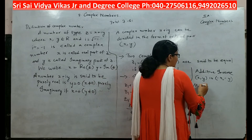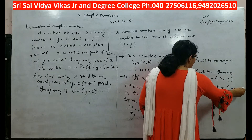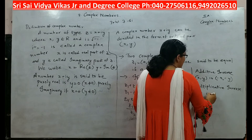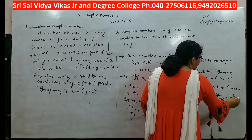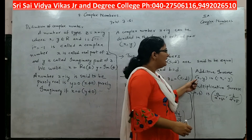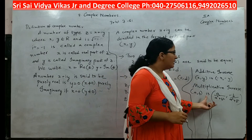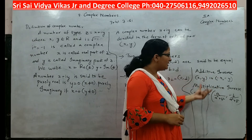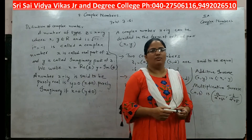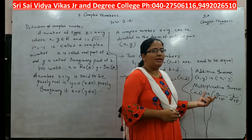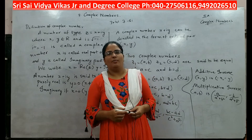Similarly, the multiplicative inverse of the complex number (a, b) is (a/(a²+b²), −b/(a²+b²)). This is the multiplicative inverse and that was the additive inverse. Multiplicative inverse means if you multiply these two complex numbers you will get 1; additive inverse means if you add the two complex numbers you get 0. So this is the multiplicative inverse of (a, b). Now we shall look into some problems to better understand how to add, multiply, and divide complex numbers.